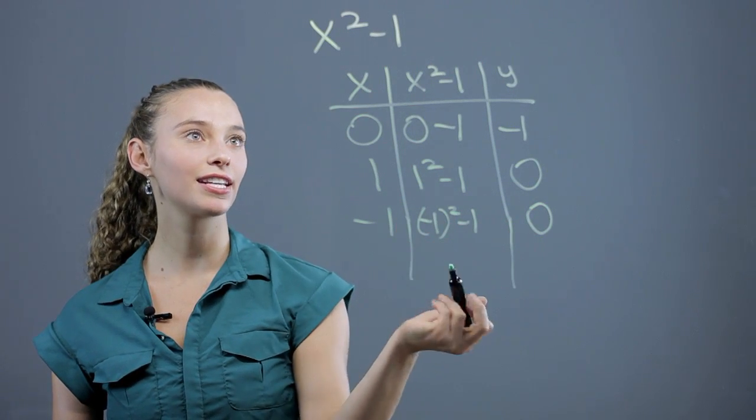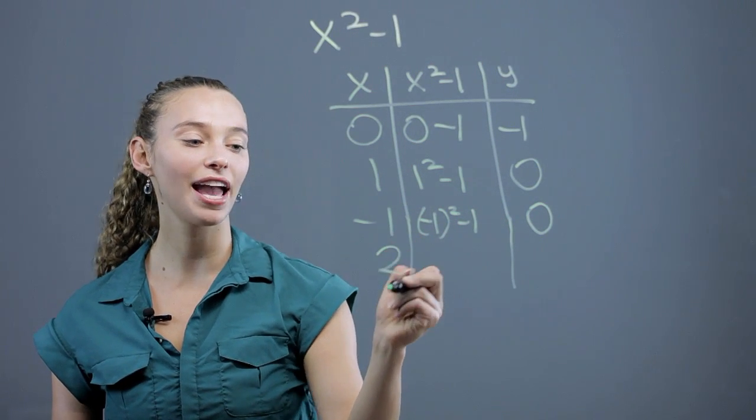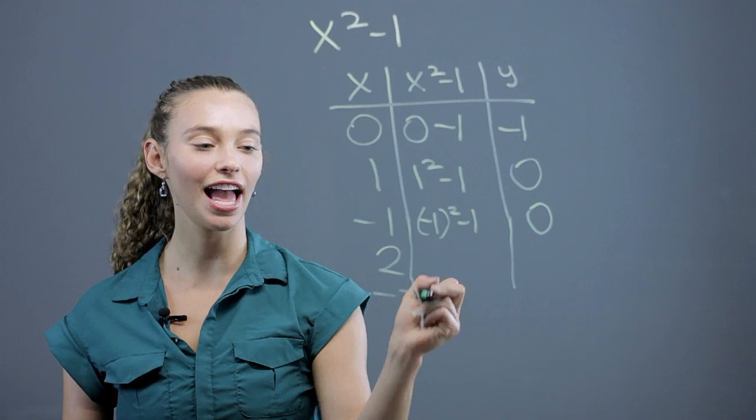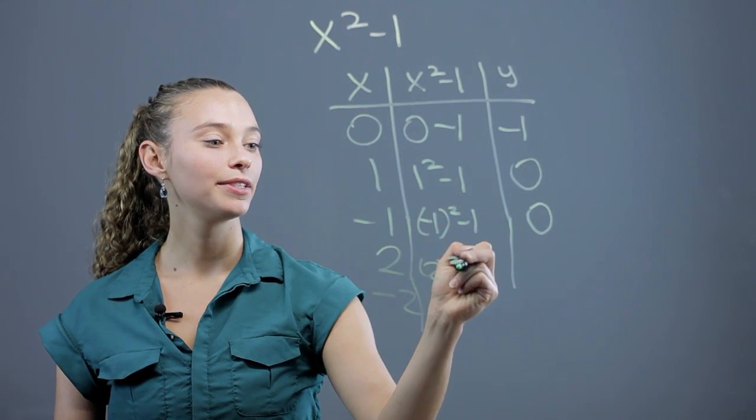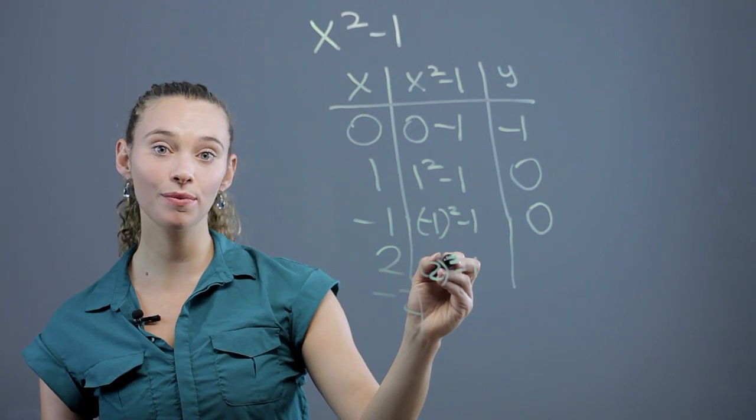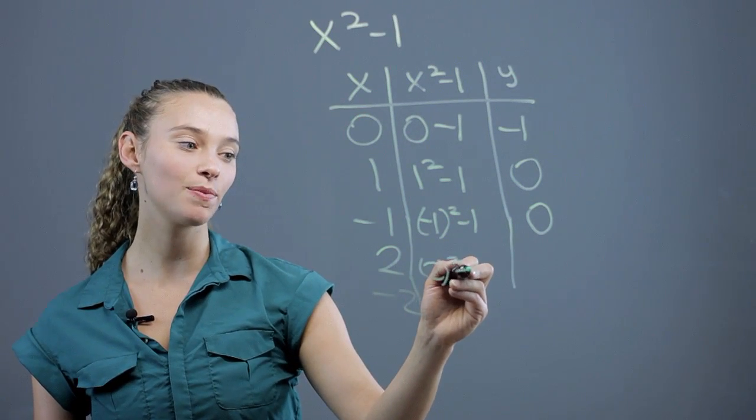Let's add a few more points. Let's say we have 2 and we'll do negative 2 for the x values. 2, plug it in for x, minus 1. So that's 2 squared is 4, minus 1 is 3.